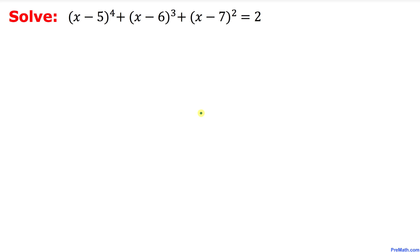Welcome to pre-math. In this video tutorial we are going to solve this given fabulous equation: (x minus 5) to the power 4, plus (x minus 6) to the power 3, plus (x minus 7) squared, equals 2. Let's go ahead and get started with the solution and look at this equation.